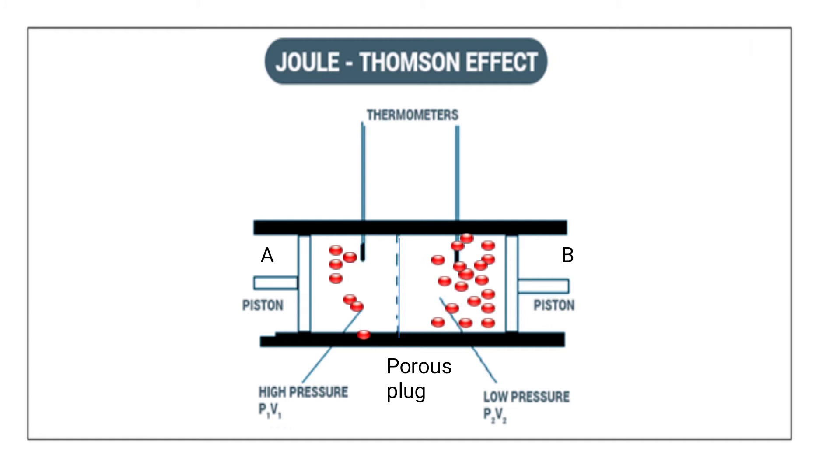Volume V1 of the gas at pressure P1 is forced through the porous plug by the movement of piston A. The gas in the right-hand chamber is allowed to expand to volume V2 and pressure P2 by moving piston B outward. The change in temperature is noted.